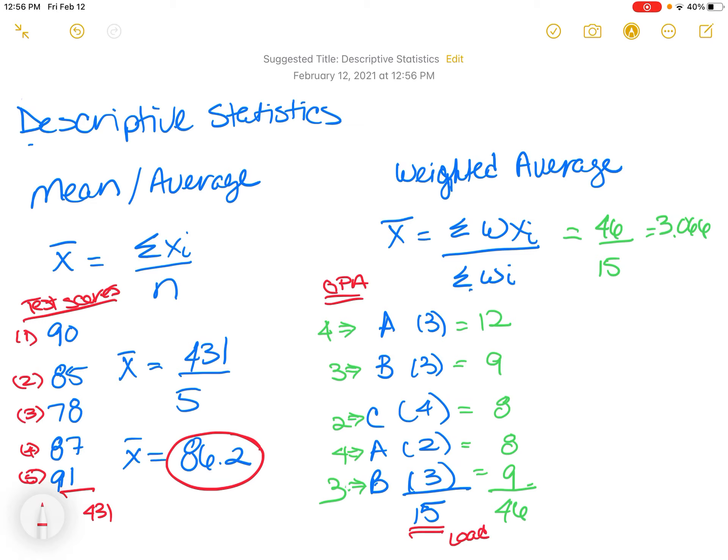And then on a four-point scale, an A is equal to four points, a B is equal to three points, a C is equal to two points. You didn't get any Ds, but if you did, a D is equal to one point and the F is equal to zero, which is what makes that bring down your weighted average. So you got four points for this A, you got three points for this B, you got two points for this C, you got four points for this A, and then you got three points for this B.